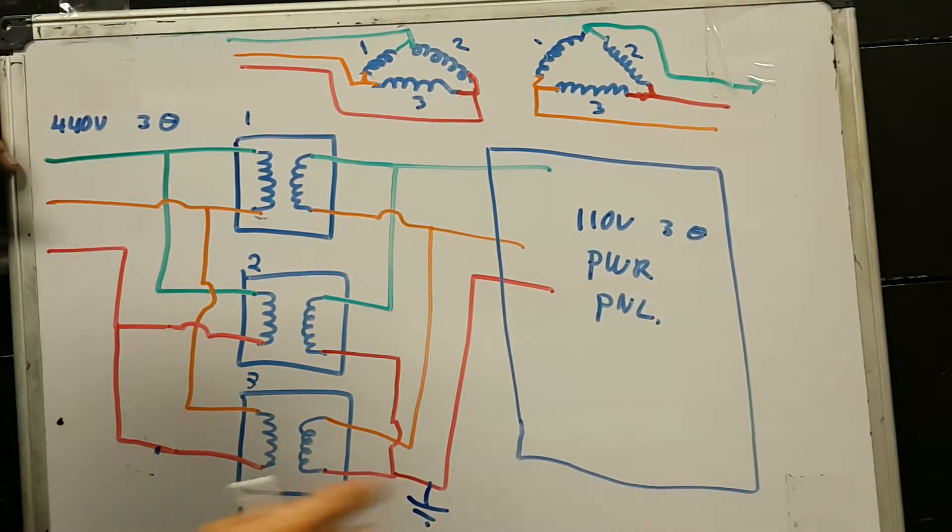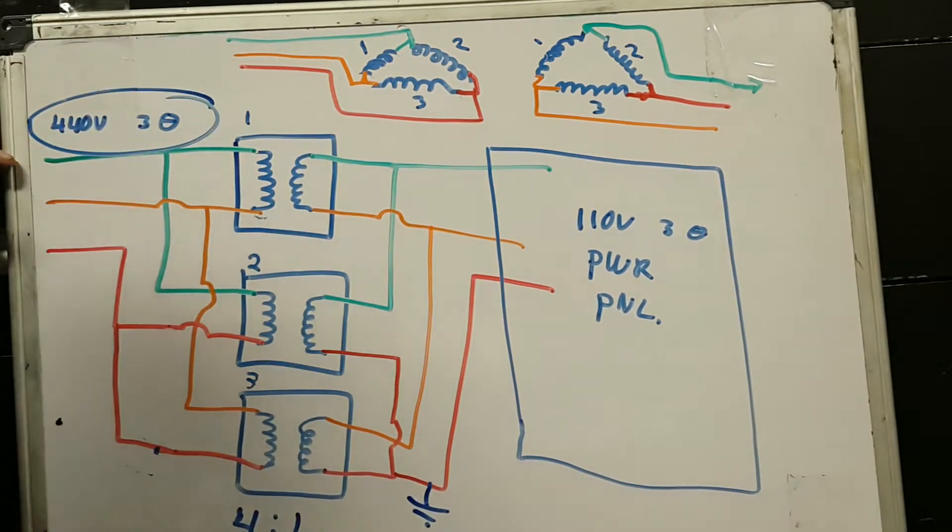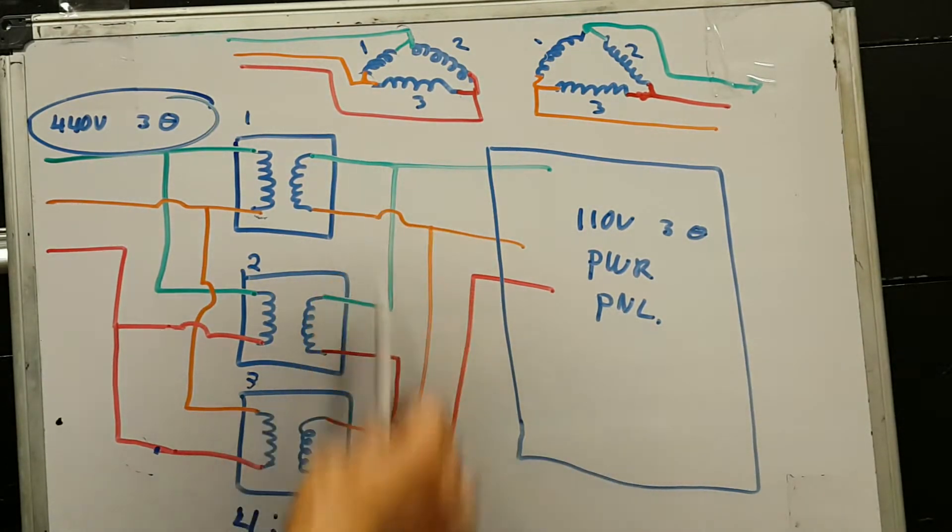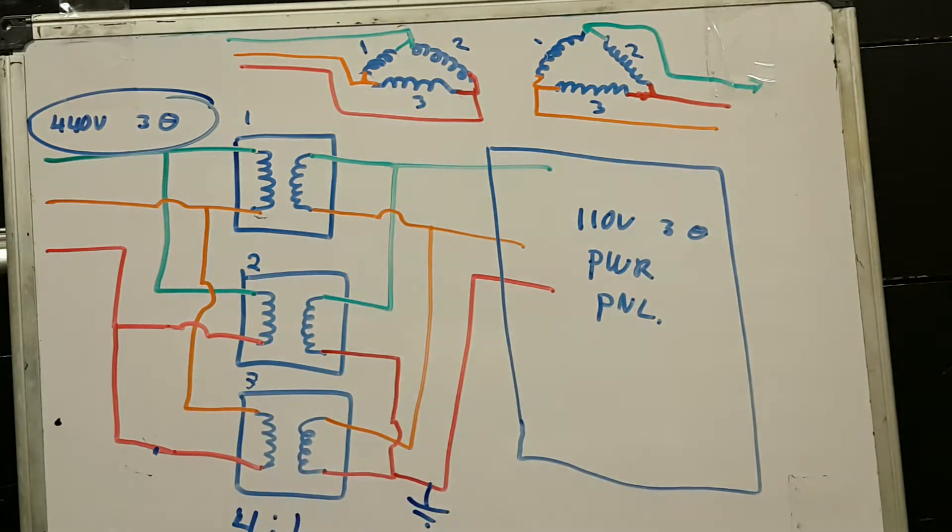So a ground on the 110 side, you will never see it in the 440 distribution system. Power panels that are fed from this distribution bank have their own ground indicators.